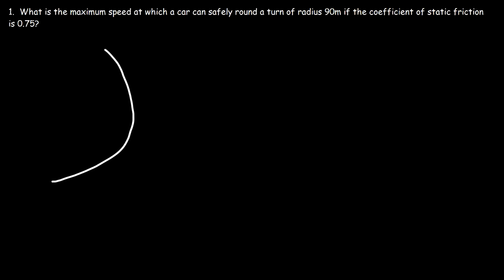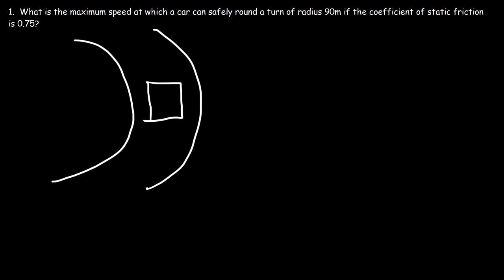Let's say a car is making a circular turn. I'm going to draw a box to represent the car, so it's going in that direction. Static friction is directed towards the center. Whenever a car makes a circular turn, static friction between the road and the tires allows it to make the turn — so static friction provides the centripetal force.